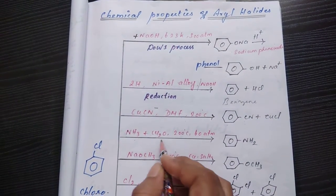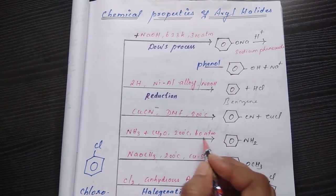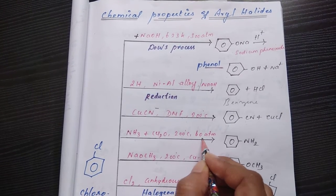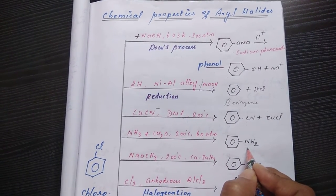If I am choosing ammonia, in presence of cuprous oxide at 200 degree Celsius, 60 atmospheric pressure, we get amine. This is aniline.